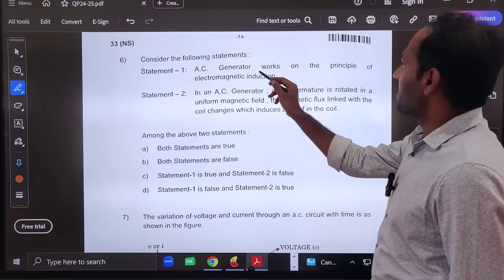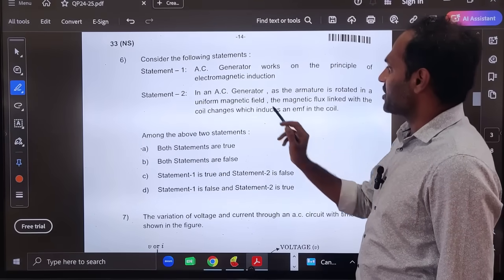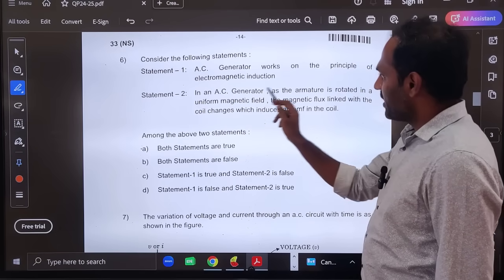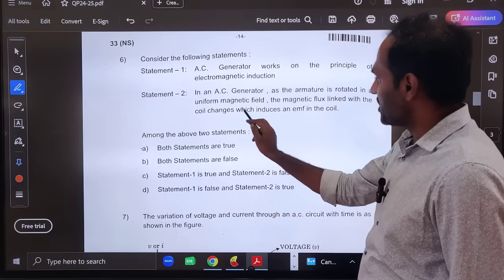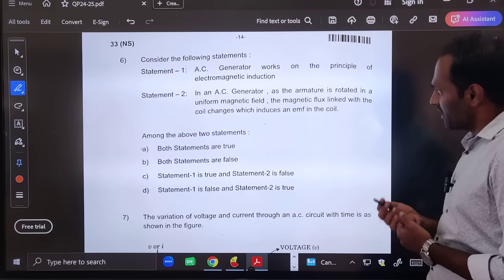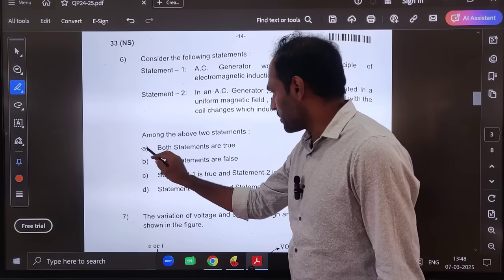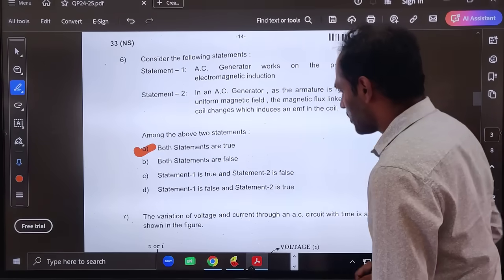Sixth question, consider the following statements. AC generator works on the principle of electromagnetic induction, it is correct. In AC generator, as the armature is rotated in uniform magnetic field, the magnetic flux linked with the coil changes which induces the EMF in it. Yes, here due to the change in orientation the EMF will be induced. It means both the statements are correct. Both statements are true.